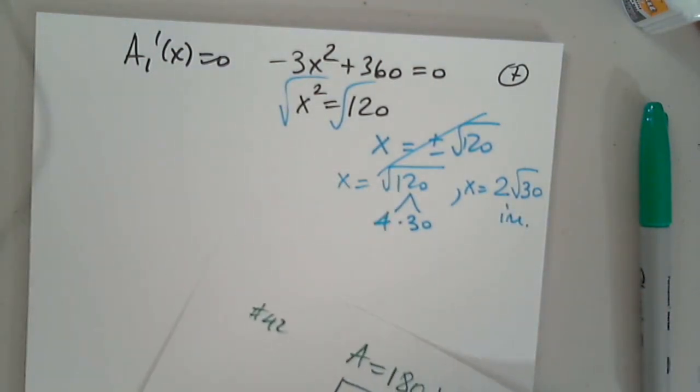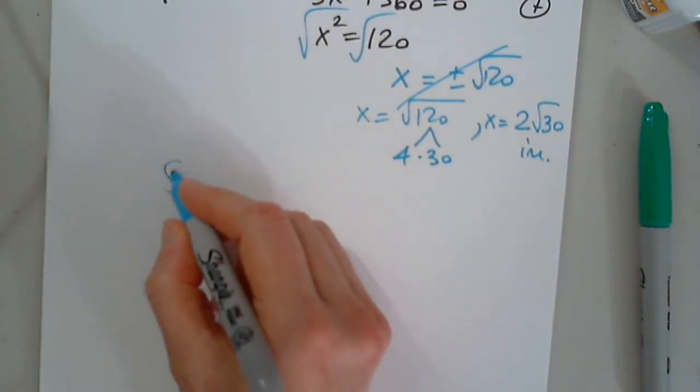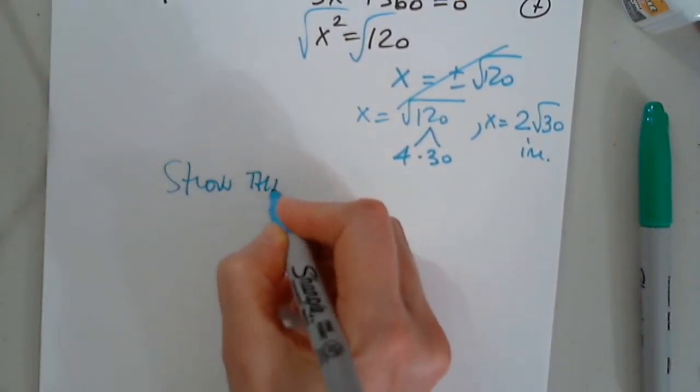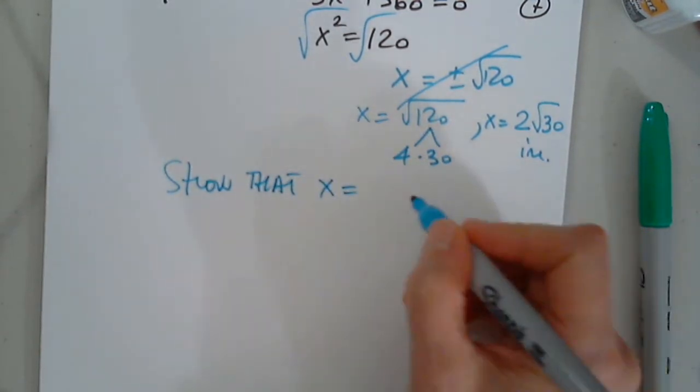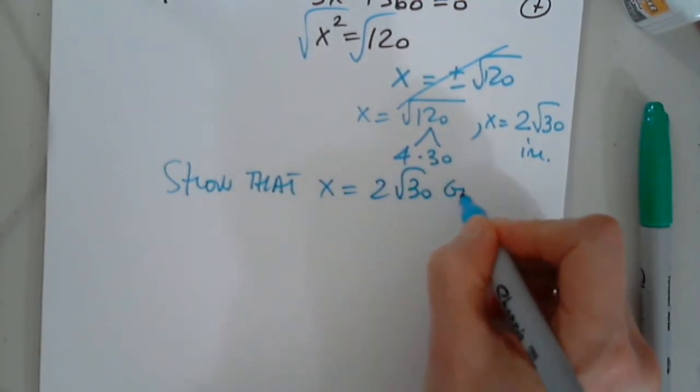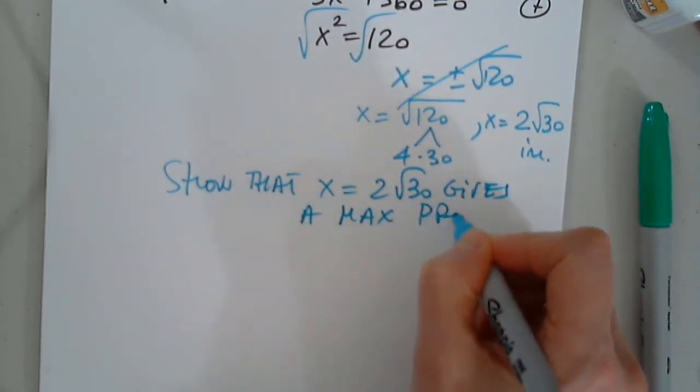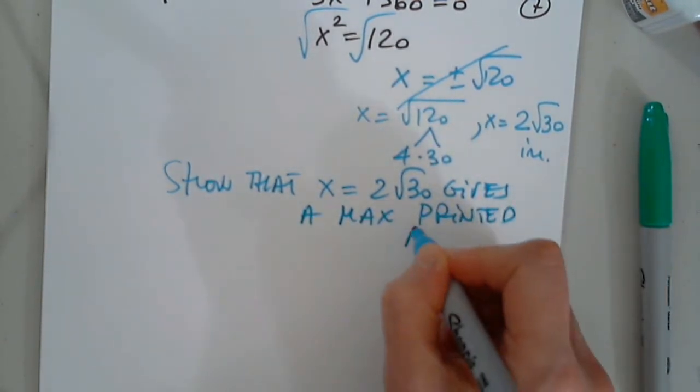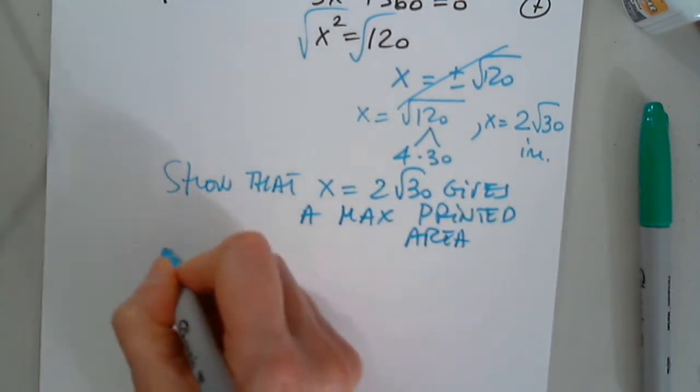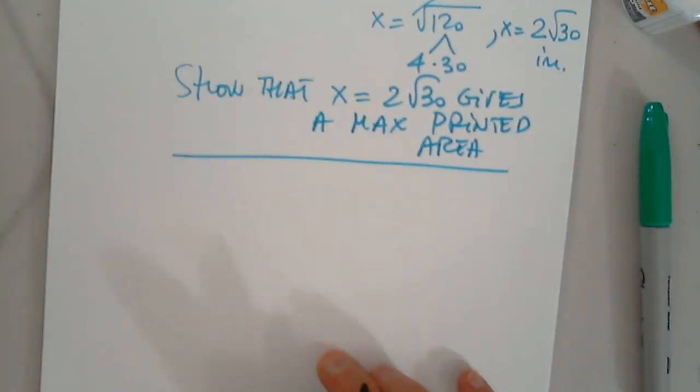I claim that this gives a maximum. Who cares what I claim? I have to show. Show that X equals 2 square root of 30 gives a max printed area. You cannot trust. We have to show.